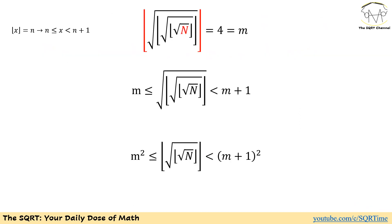To solve this problem, let's start by using m for the whole expression. Obviously m is going to be 4 here, but it's easier to start with m to denote the whole expression for now. We are going to remove the floor function shown in red. Remember: for a positive value of x, if floor of x equals n, then x is greater than or equal to n and less than n plus 1.